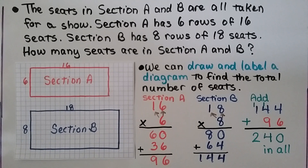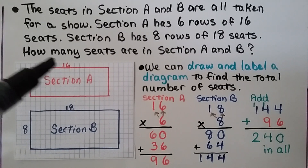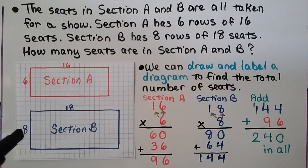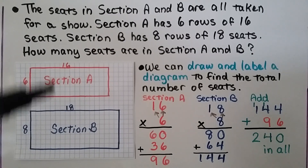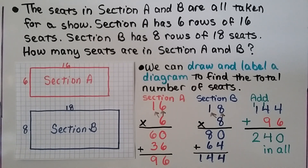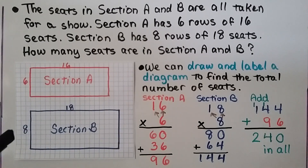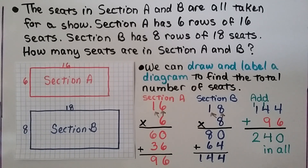The seats in section A and B are all taken for a show. Section A has six rows of sixteen seats, and section B has eight rows of eighteen seats. How many seats are in section A and B? We can draw and label a diagram to find the total number of seats. We need to do six times sixteen and eight times eighteen, then add them together.